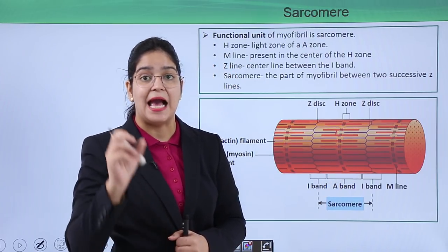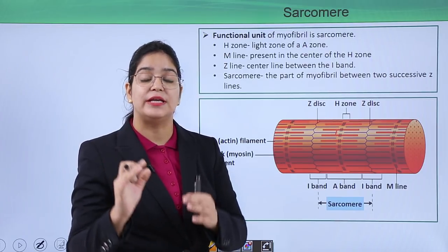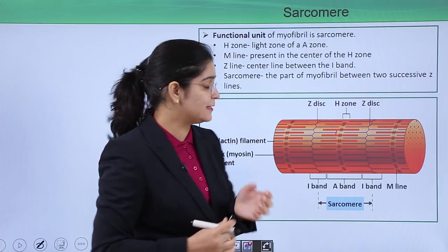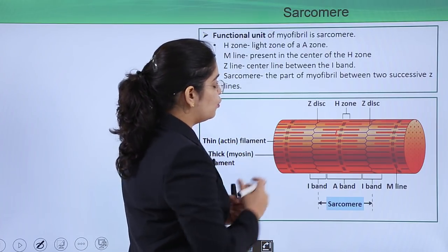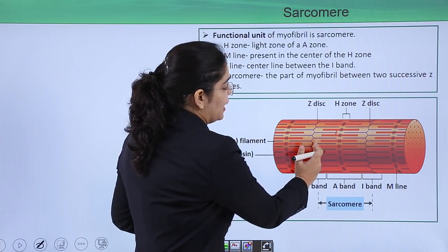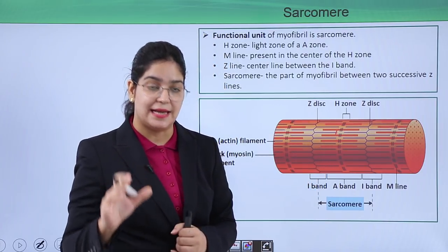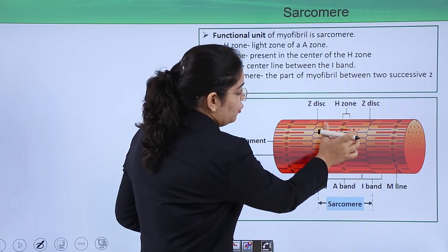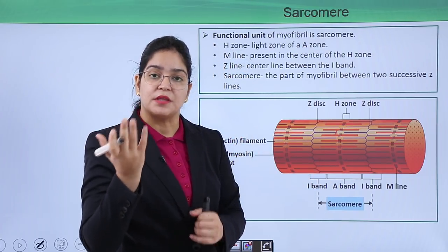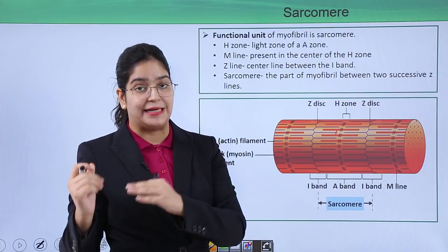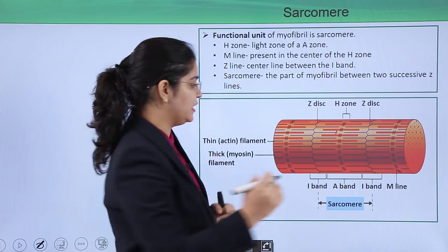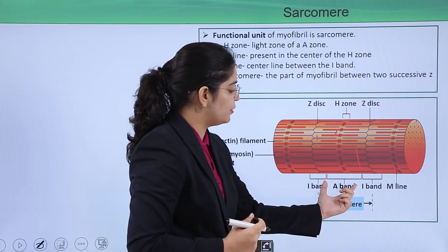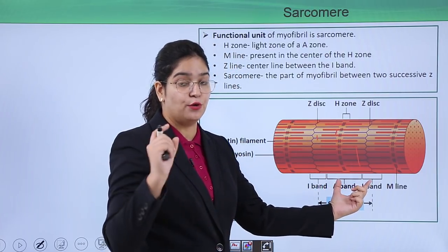This zone is called the H zone. It also has an M line, which we will learn about in other slides. The zone in which there is overlapping of both thin and thick filaments — where neither thin nor thick is present separately but they overlap each other — is known as the A band.